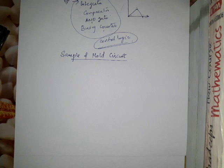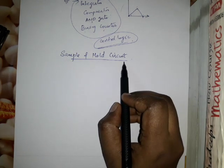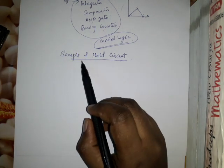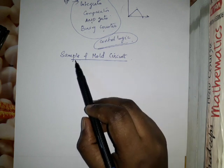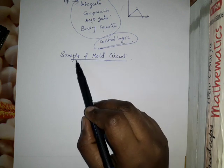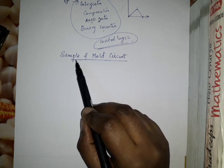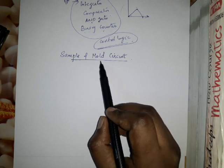Now we are going to the last topic of the 6th module, that is the Sample and Hold circuit. This circuit has to sample the signal and it should hold the sampled value.